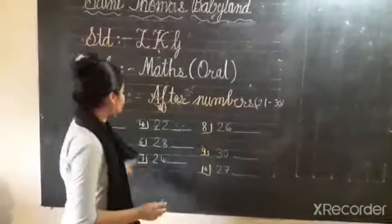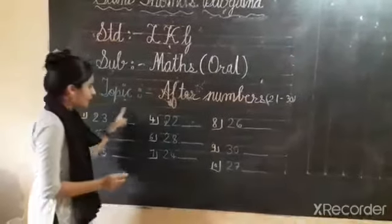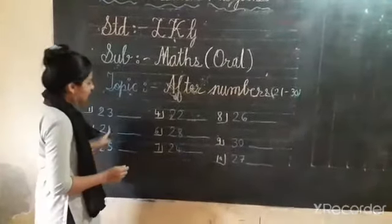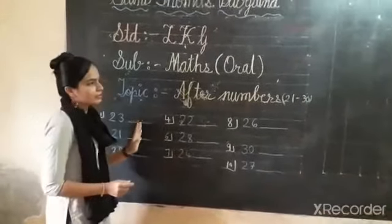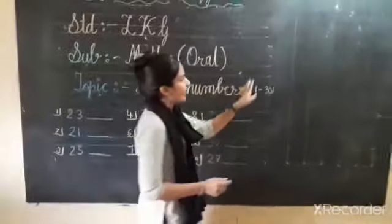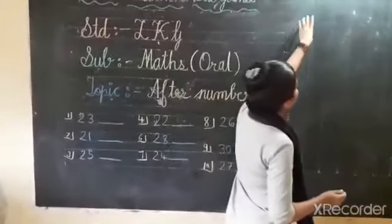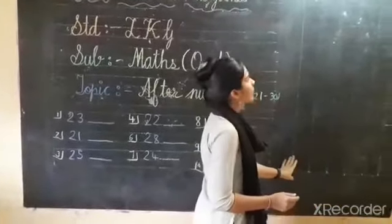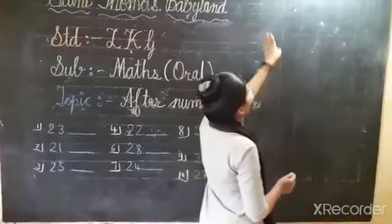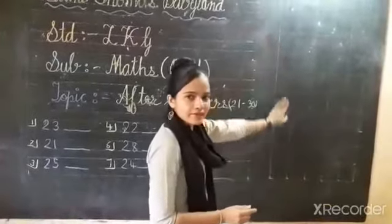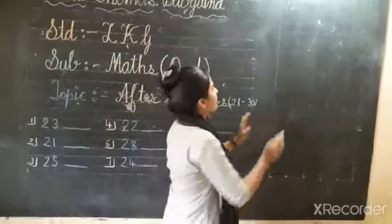I am ready right here with after numbers. Before that, I have 21 to 30 numbers ready. Because like this, you can easily understand after numbers.